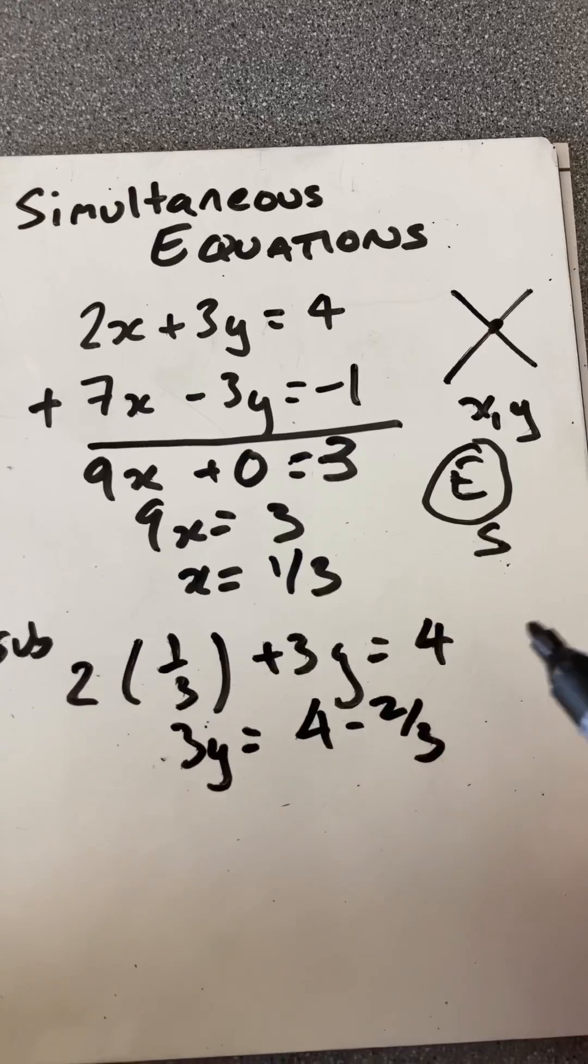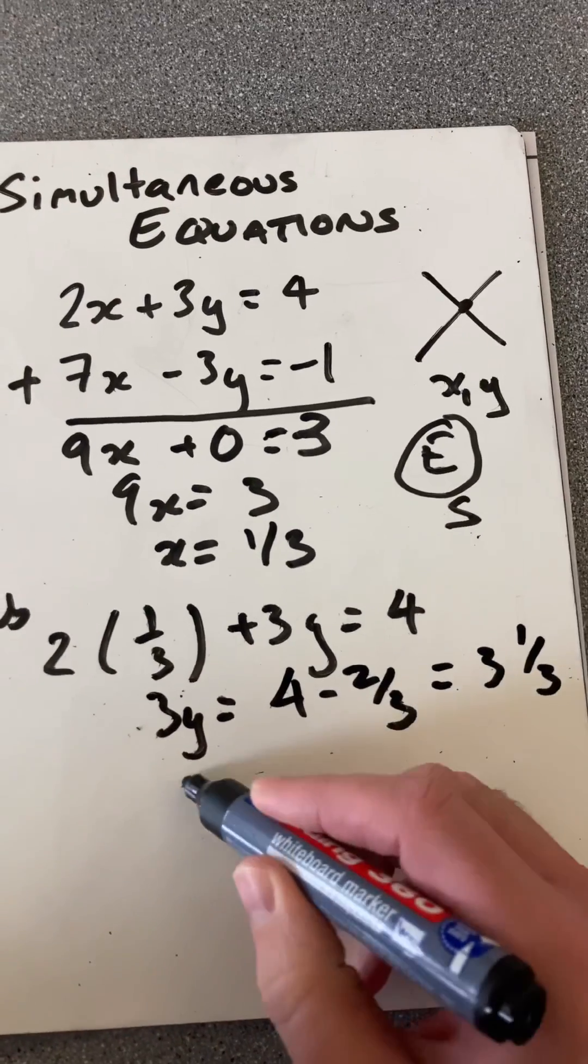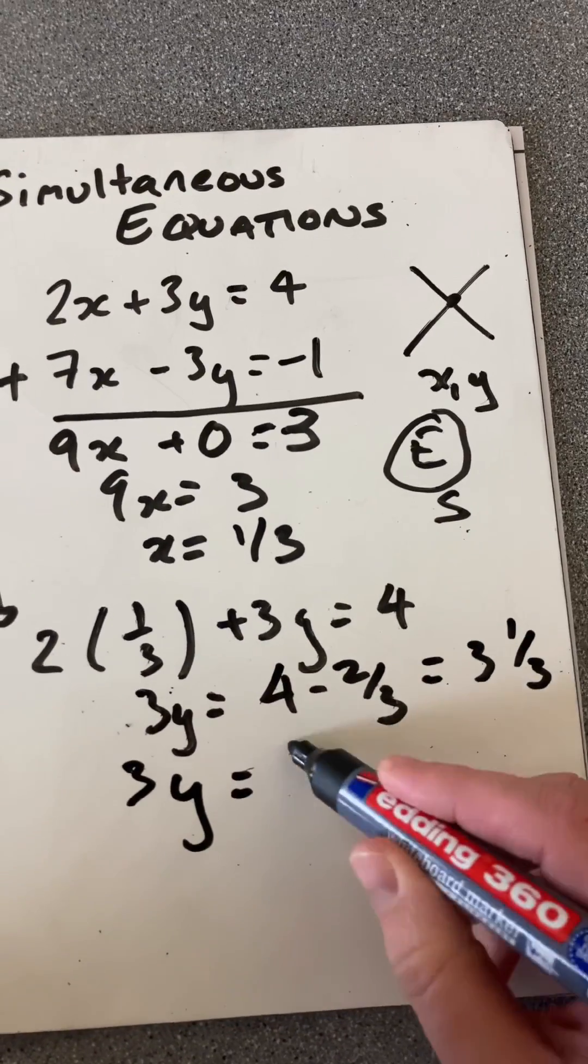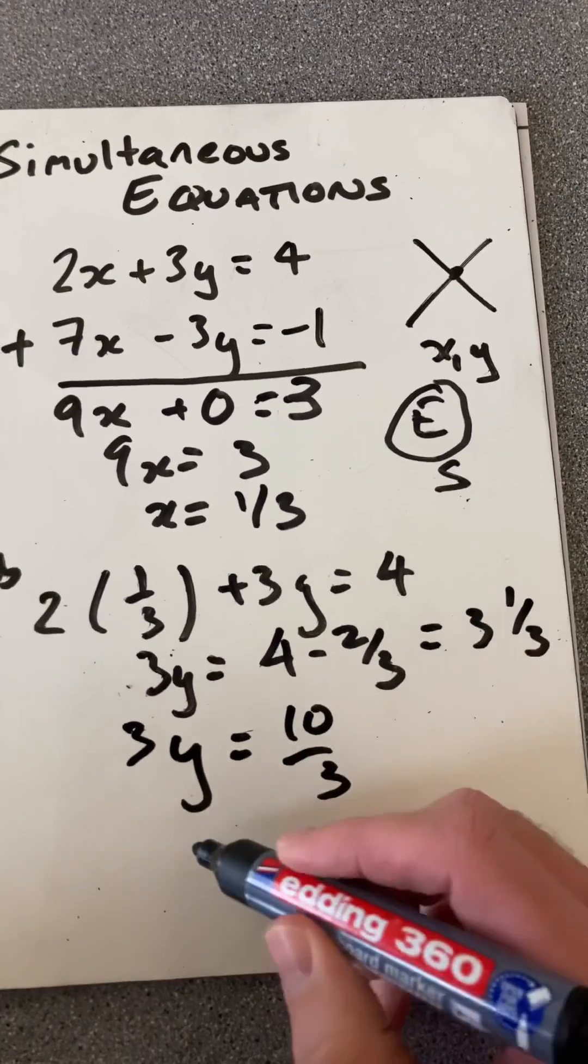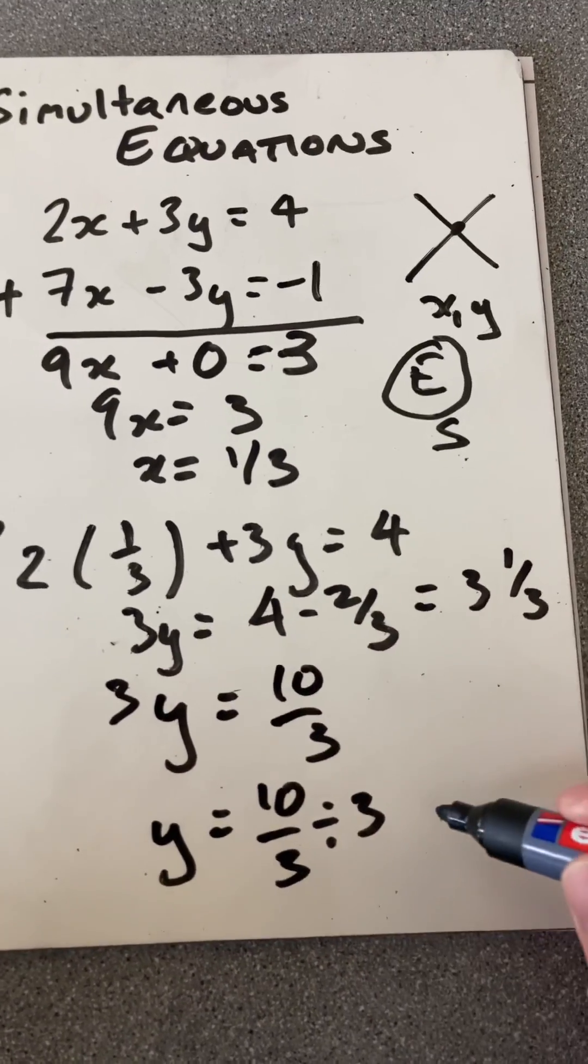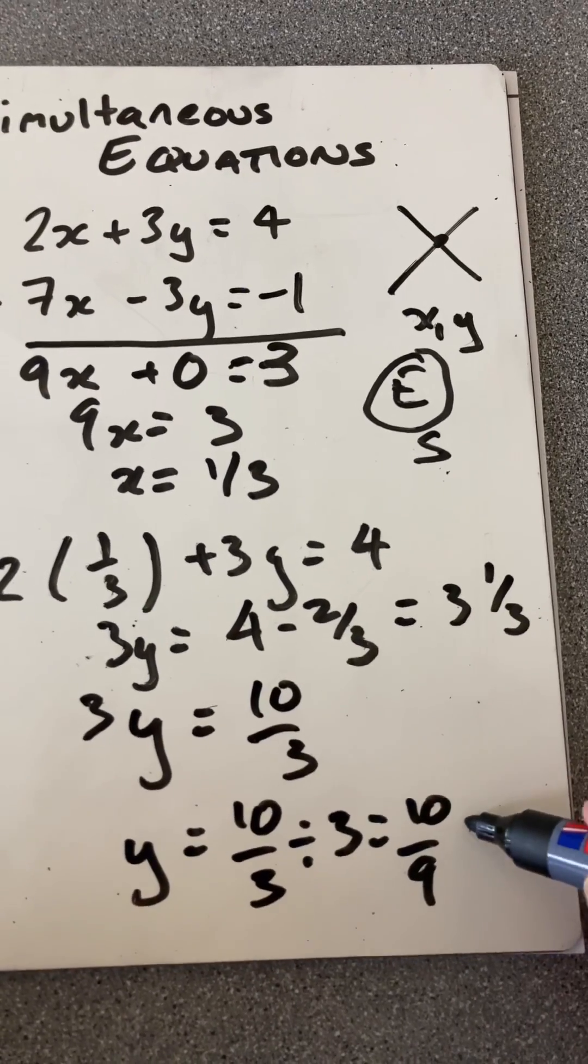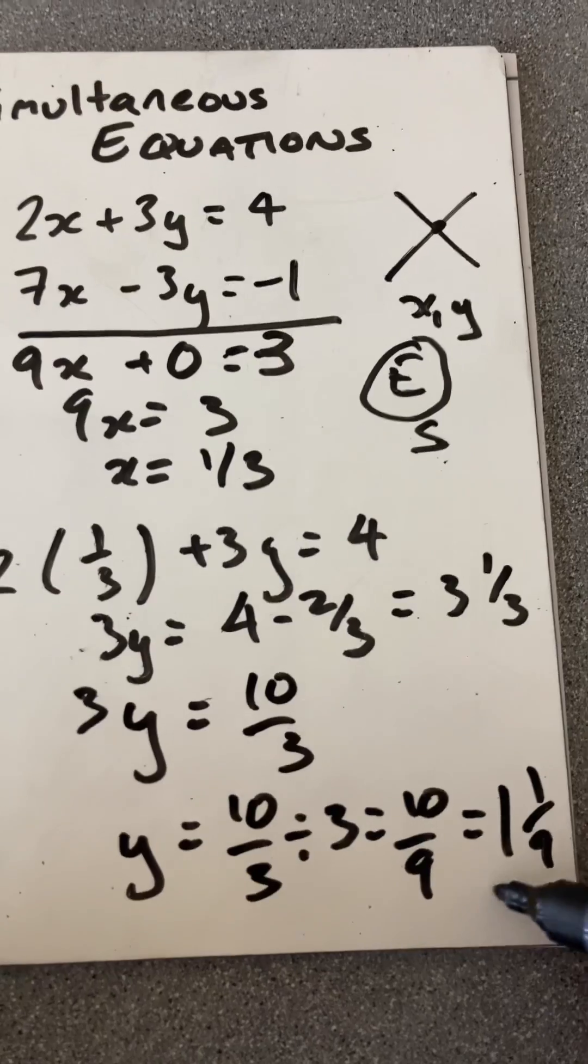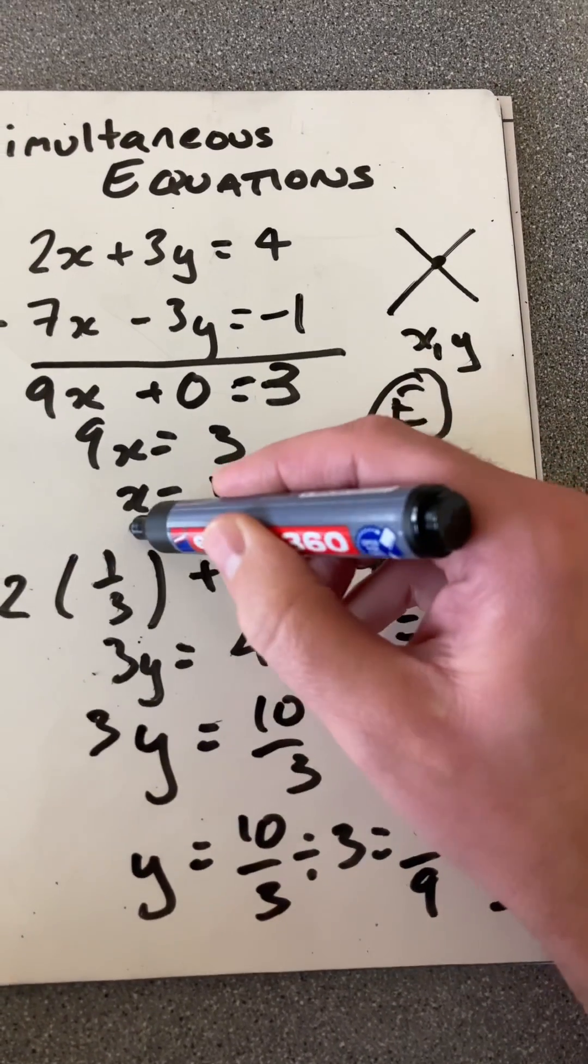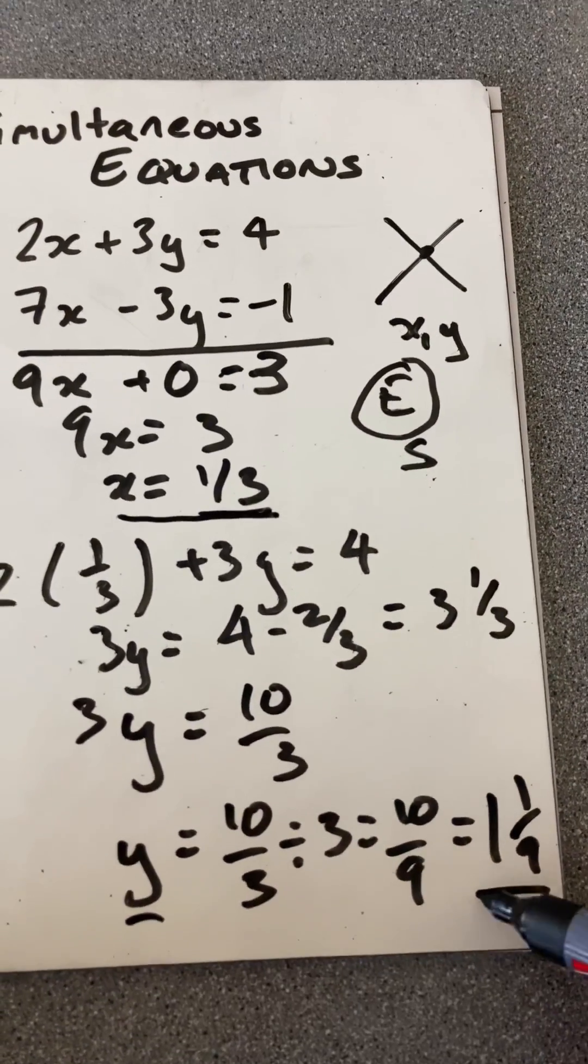I've moved that over here, which is 3 and a third. So y will equal, well, 3y will equal, make that 10 over 3. So y will equal 10 over 3 divided by 3, which is 10 over 9, or 1 and 1 ninth. So the solutions are x equal to a third and y equal to 10 over 9.